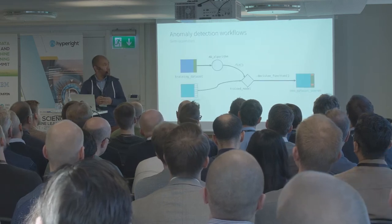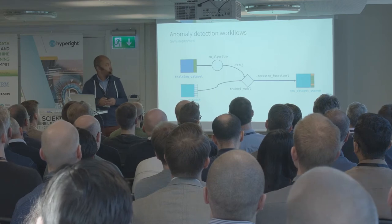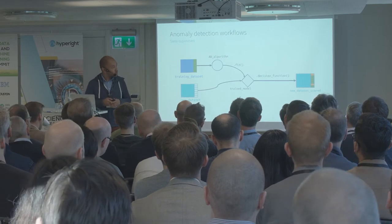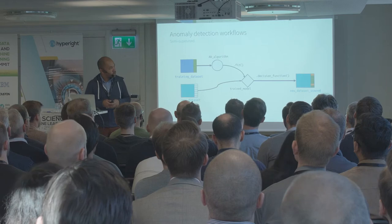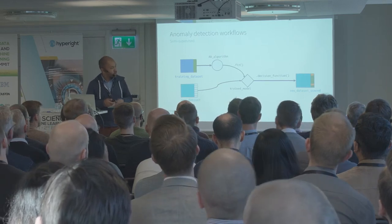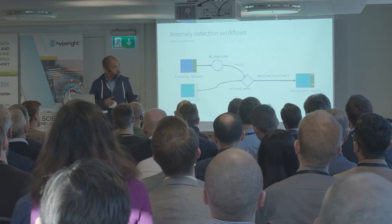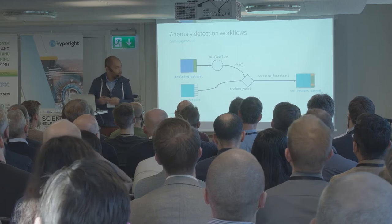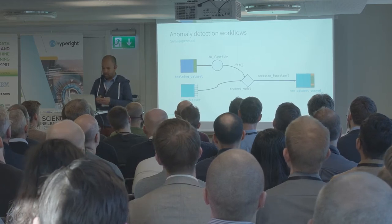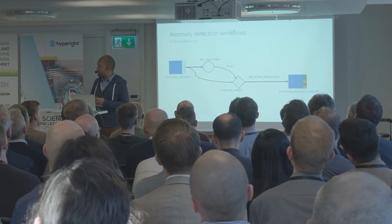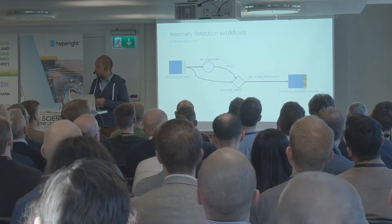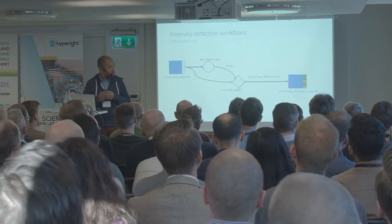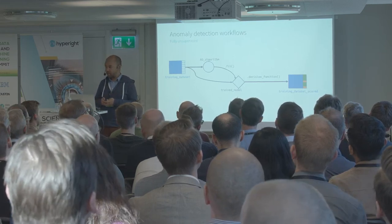In a more schematic way, here is an example of how you would process a semi-supervised problem. You have your training dataset, your anomaly detection algorithm trains only on the normality. And then once you get new data without labels, you will get, by using what we call the decision function, an anomaly score reflecting whether or not your data points are outliers. For the fully unsupervised case, which we will focus on during this presentation, with no labels at all, you train your algorithm and apply the decision function to get the anomaly score on each of your data points.